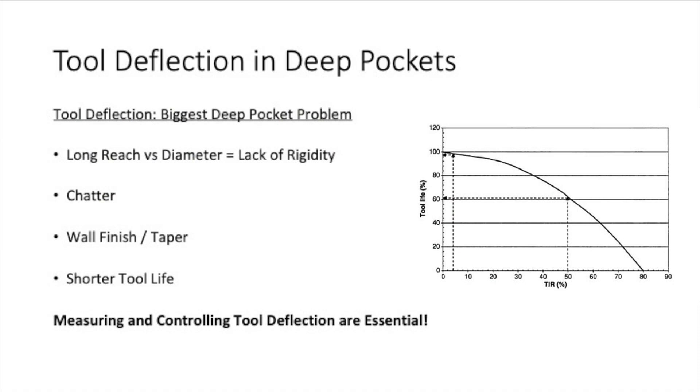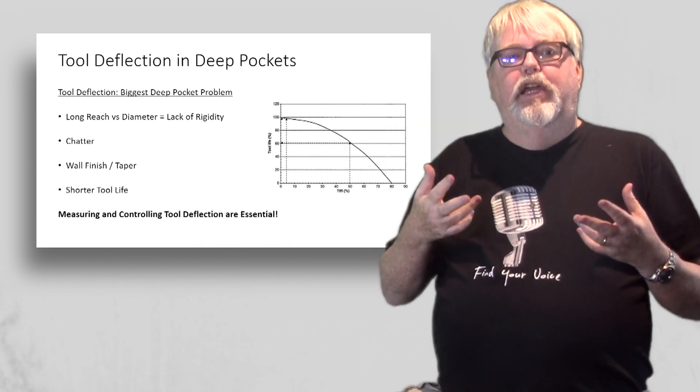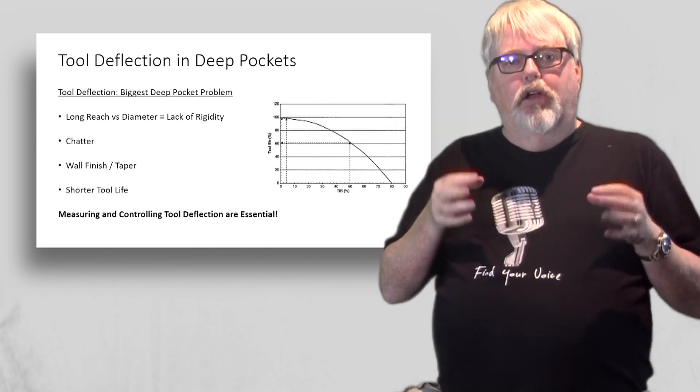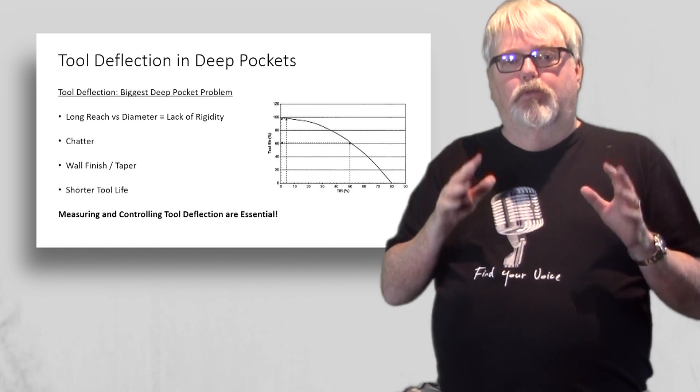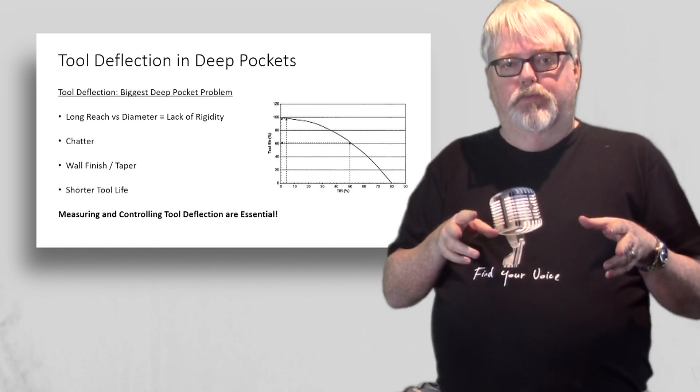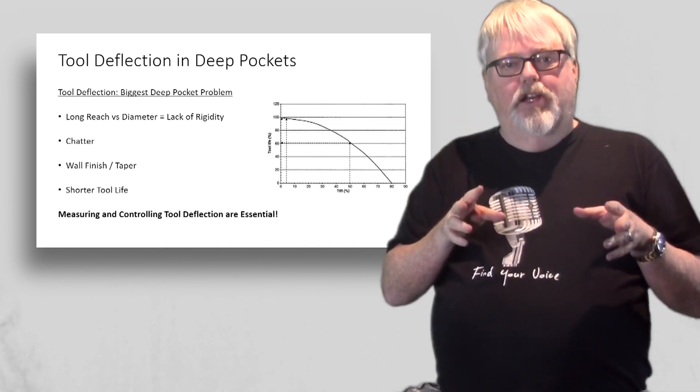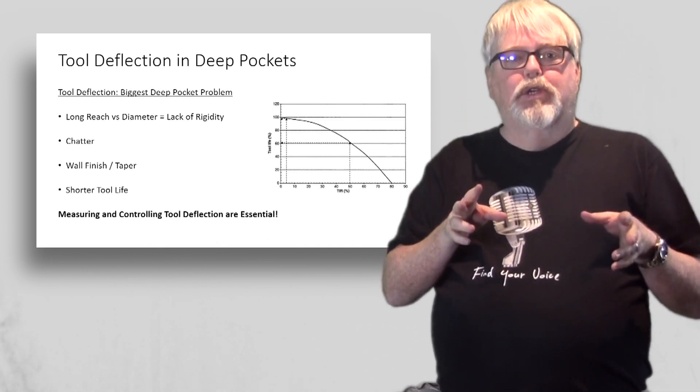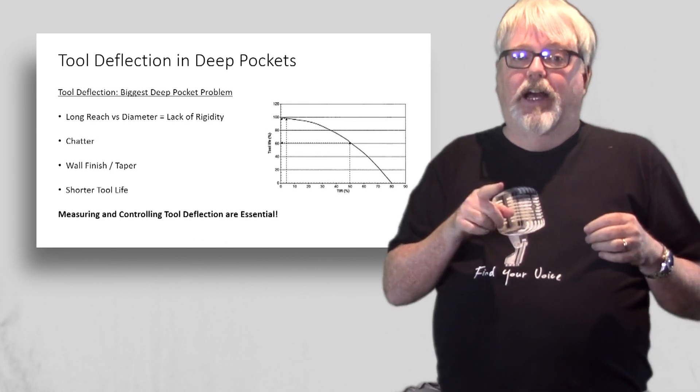Let's take a closer look at tool deflection and see why it's such a big problem for deep pockets. The issue we face is the need for a long reach tool versus the diameter of the tool. This results in a lack of rigidity which leads to tool deflection. When we have excessive tool deflection, that encourages chatter, messes up the wall finish and generally leads to shorter tool life.